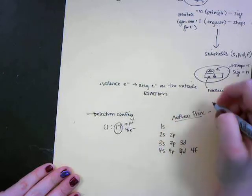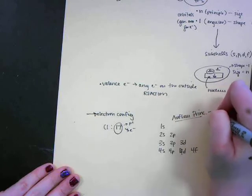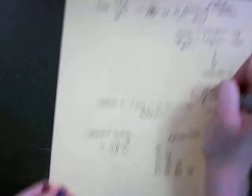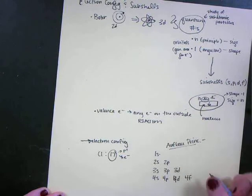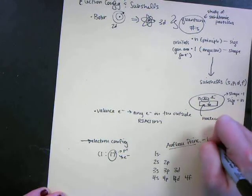Aufbau's principle states that we put things in the lowest subshell, the lowest energy subshell. This 1s up here is the one that's closest to the 50-yard line. We want to put things in the lowest energy subshell as close to the nucleus as possible. That's where these electrons like to be.